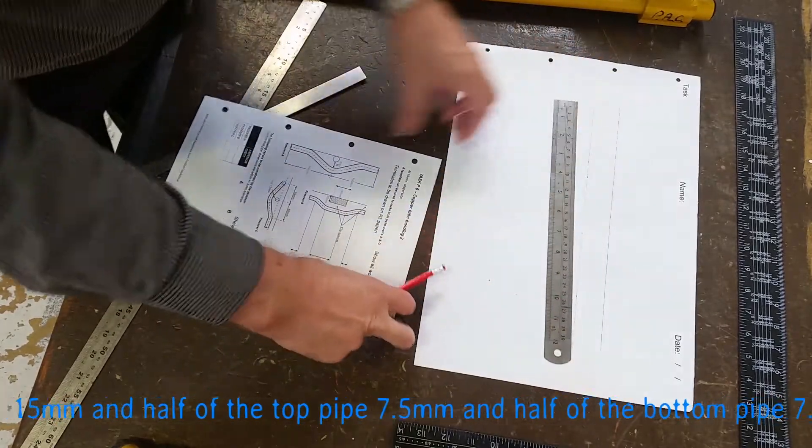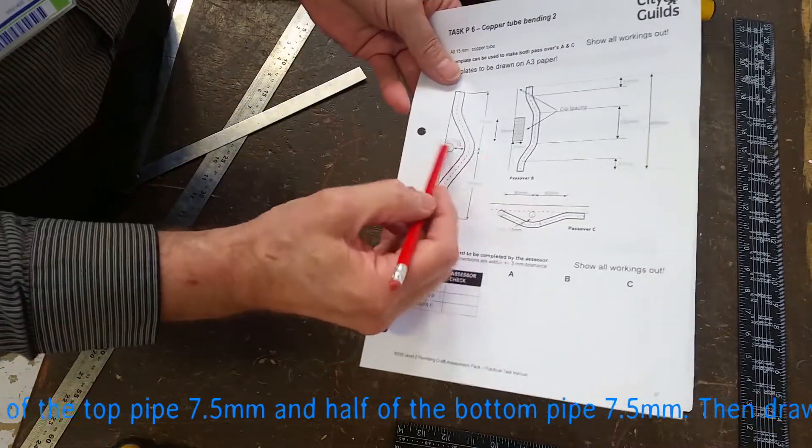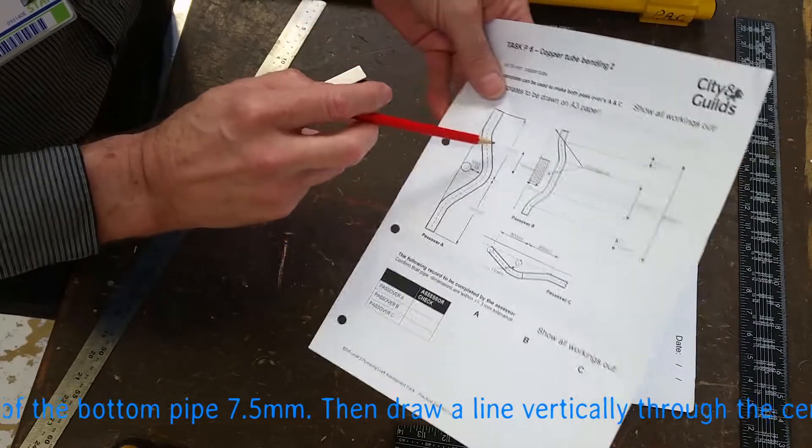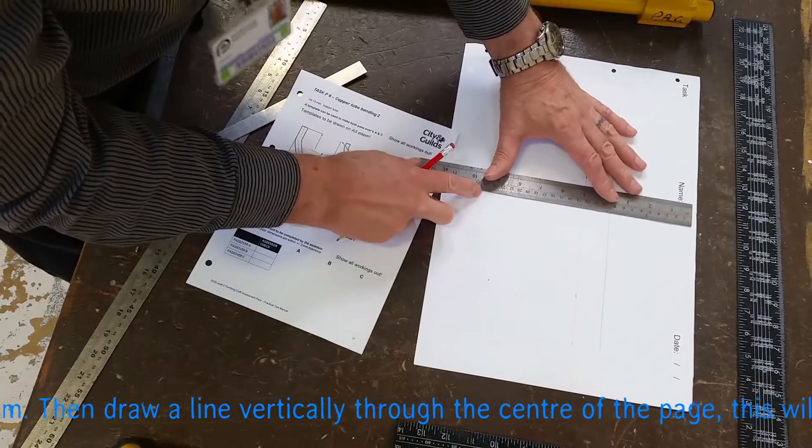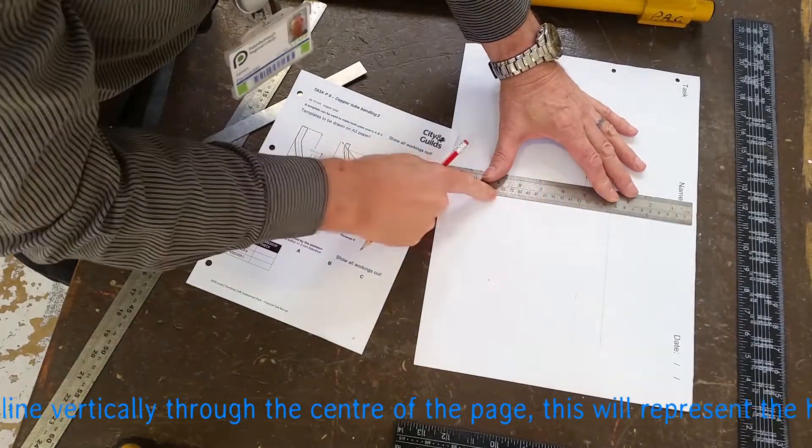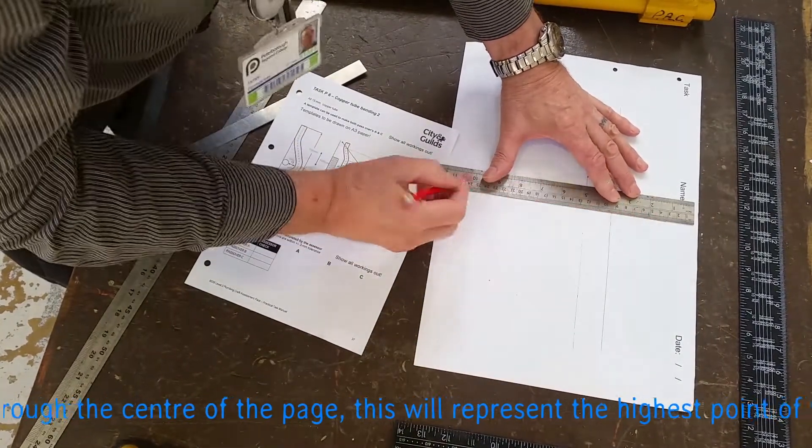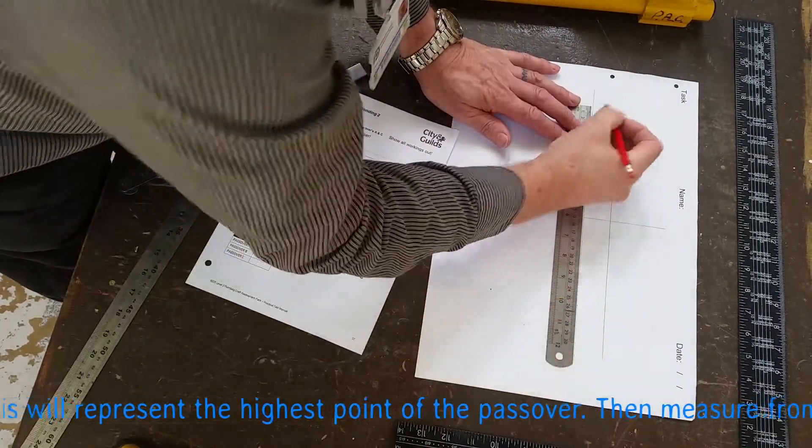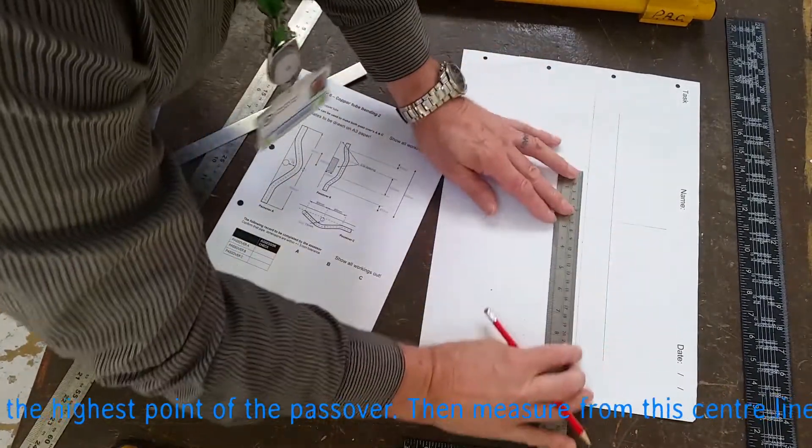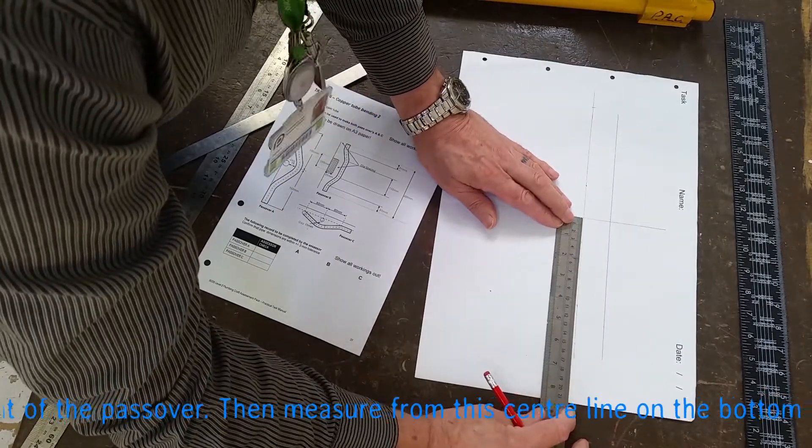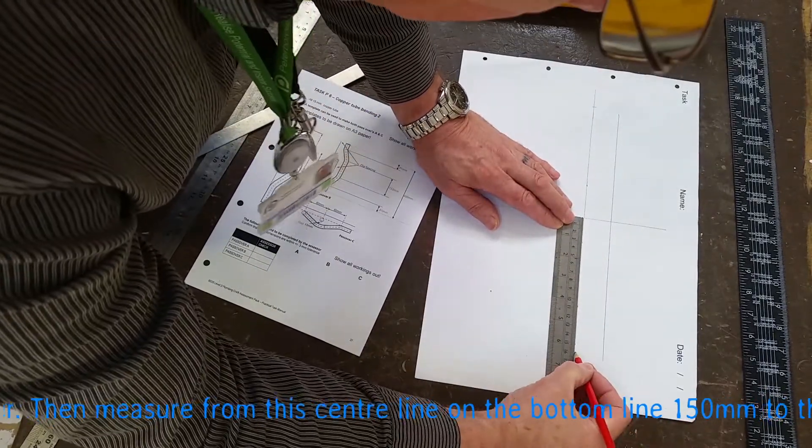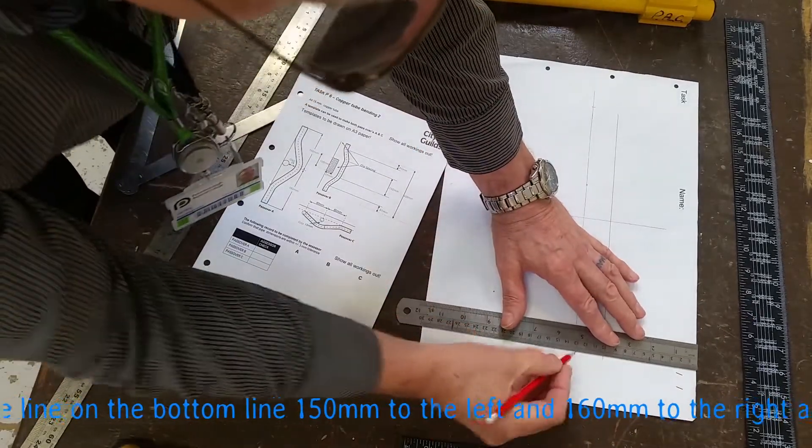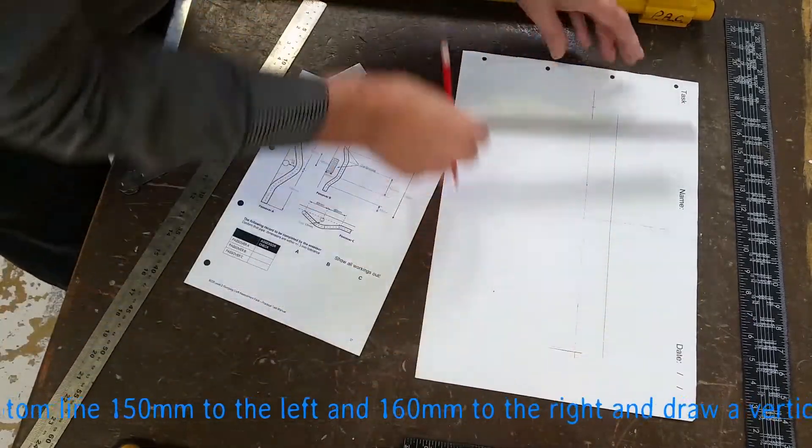The next line we need to draw is the center line, and that would be the highest point of our top bend. So 90 degrees to the lines we've just drawn in the middle of the page, just draw a line all the way through. Then we can measure our end of our pipes, which is on the left 150, on the right 160. Just draw a little line on there so when you lay your pipe on the paper, you can see the line underneath your pipework.